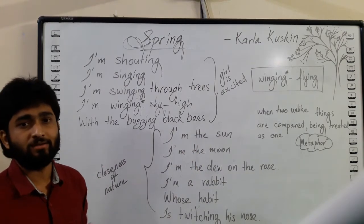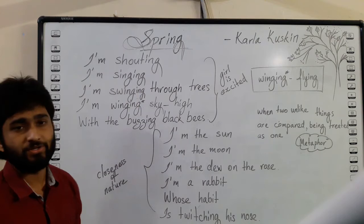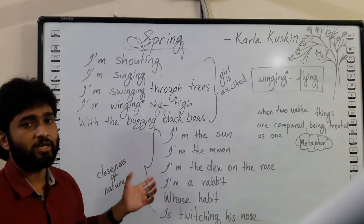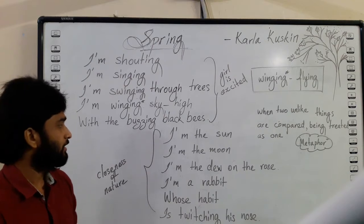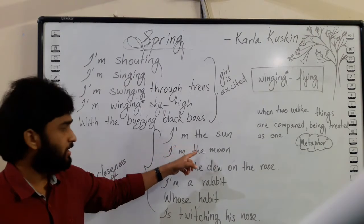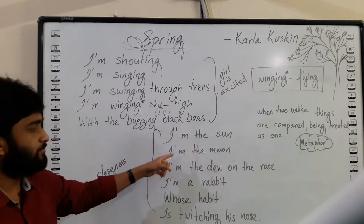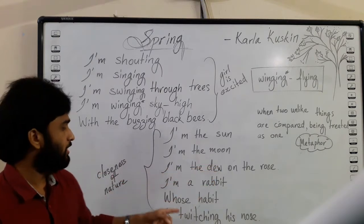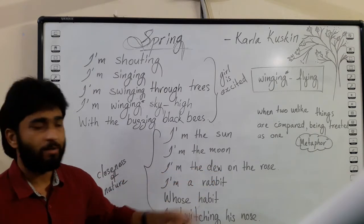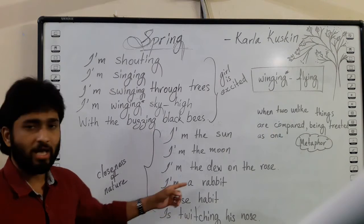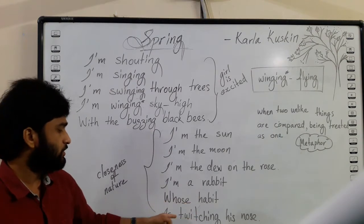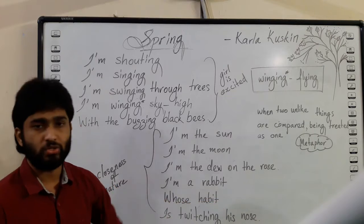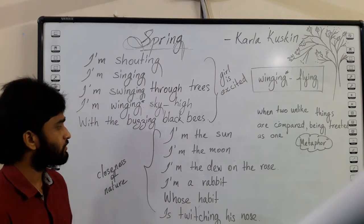This is what we see in the first stanza. Let's move to the second stanza: 'And the sun and the moon and the dew and the rose are a rabbit whose habit is stretching his nose.'